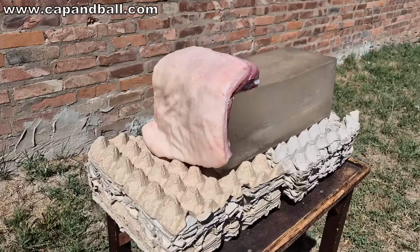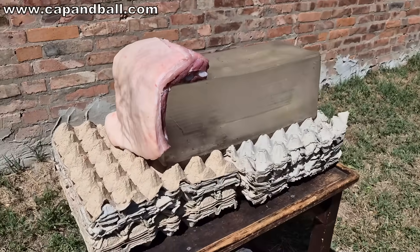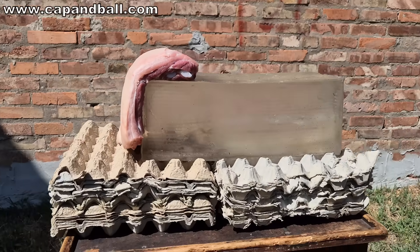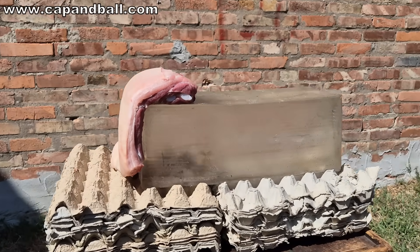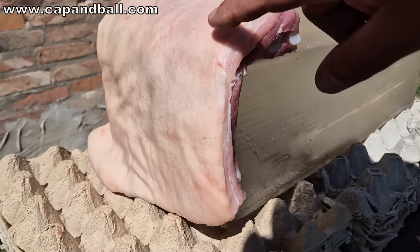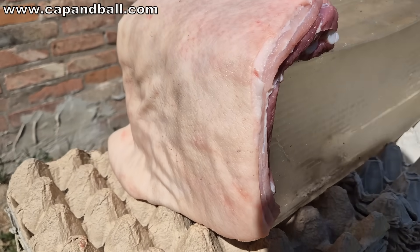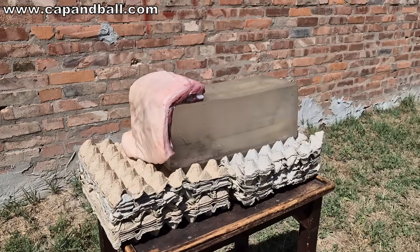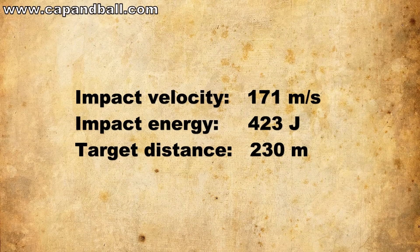And this is how the target looks like. We have an impact velocity set, and we are just interested in whether it will penetrate or not. This is the fresh belly of the pork with the skin on it. Let's see what happens at 171 meters per second impact velocity — that is 423 joules of impact energy, corresponding to 230 meters of impact distance.